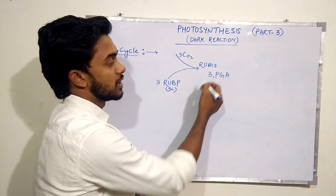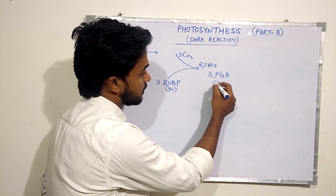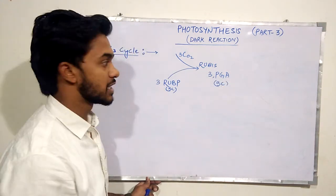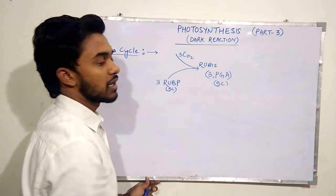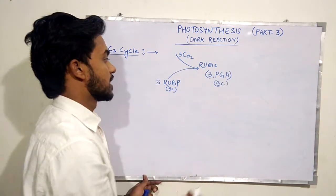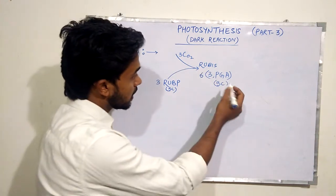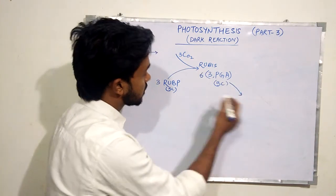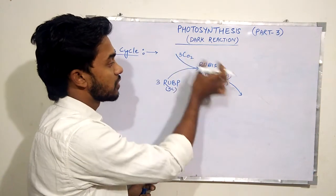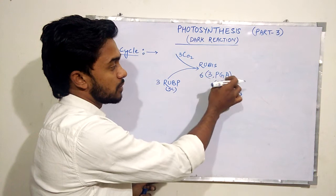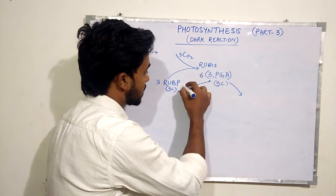In the presence of the enzyme Rubisco, RuBP gets converted into a compound named 3-PGA, that is 3-phosphoglycerate. The phosphate group is present at carbon number three. This is also a three-carbon compound. The first stable product of the C3 cycle is 3-PGA, which is why the Calvin cycle is named the C3 cycle. Six molecules of 3-PGA are formed. This process — from RuBP and CO2 to 3-PGA — is known as carboxylation.